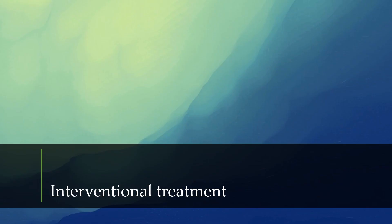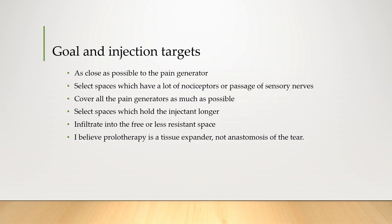I will now discuss my interventional treatment strategies for chronic adult knee pain. My goals and injection targets are as follows: to inject as close as possible to the pain generator; to select spaces that have a lot of nociceptors or passage of sensory nerves; to cover all the pain generators as much as possible; to select spaces that hold the injectant longer; and to infiltrate into the free or less resistant space. Regarding prolotherapy, it acts as a tissue expander and does not involve anastomosis of the ends of the tissue.